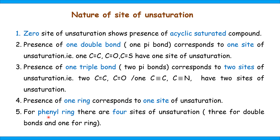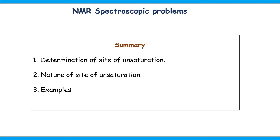For example, the phenyl ring has 4 sites of unsaturation. This is the nature of site of unsaturation. In this video, we saw how site of unsaturation is determined, the nature of site of unsaturation, and worked through several examples of its calculation.